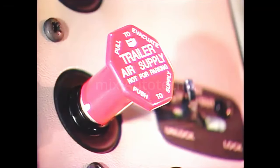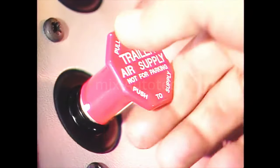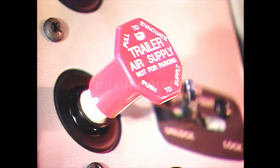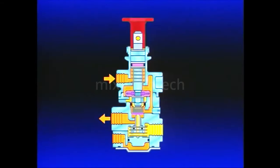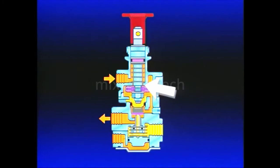To disconnect the tractor and trailer, the operator must pull the PP7 button. Pulling the button closes the plunger inlet and unseats the exhaust valve. Air that was flowing out the delivery port returns to the PP7 and exhausts from its vent.